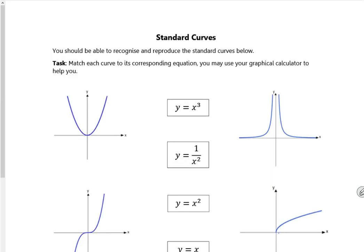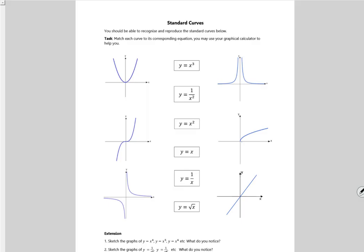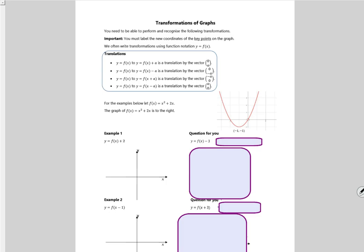Right, so the first bit is a quick match-up, so we've got x squared, x cubed, 1 over x squared, my favourite, y equals x, 1 over x, and the positive square root of x. I think that's everything there. You've got some sketching if you want to do it, so that's the first page done.